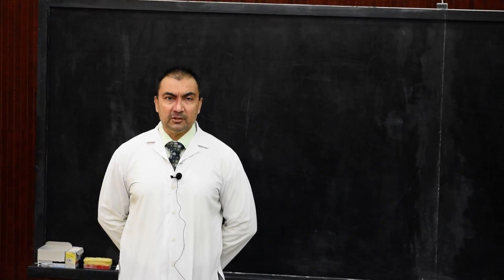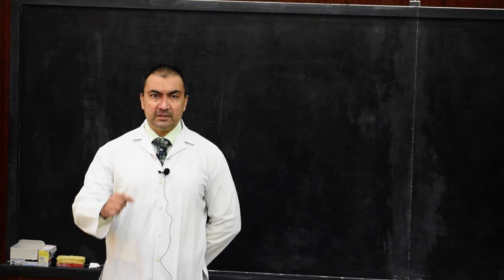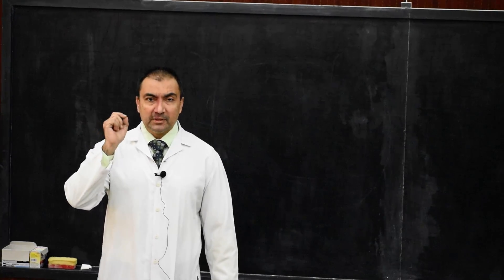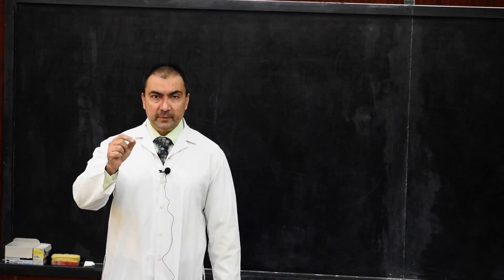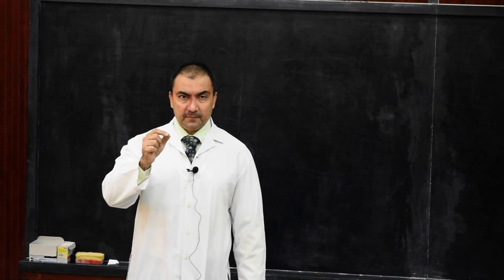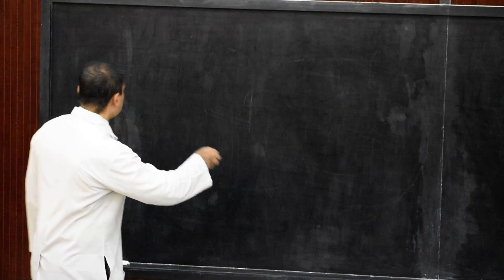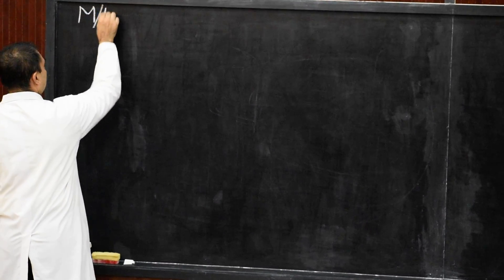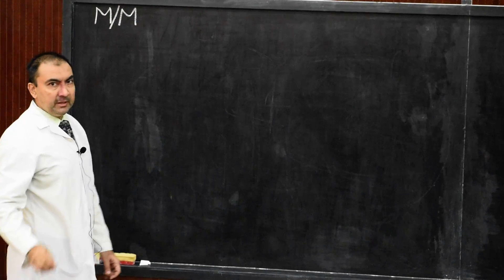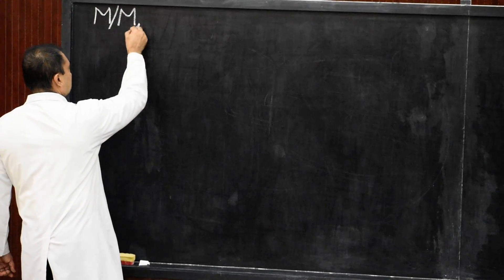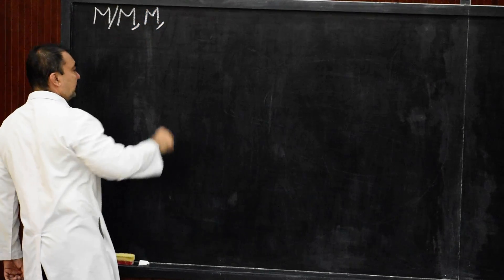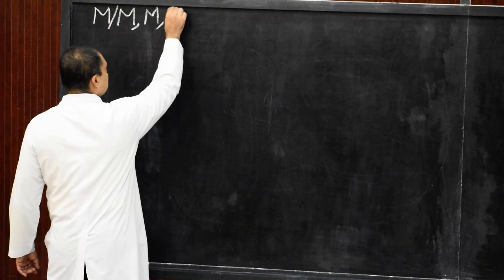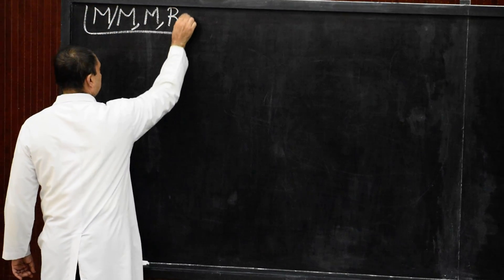Good morning students. Here we come up with the gross anatomy lecture of the movements and mechanism of knee joint, muscles producing movements, and relations of the knee joint. The title will be movements and oblique mechanism of the knee joint, then muscles producing movements, and the relations of knee joint.